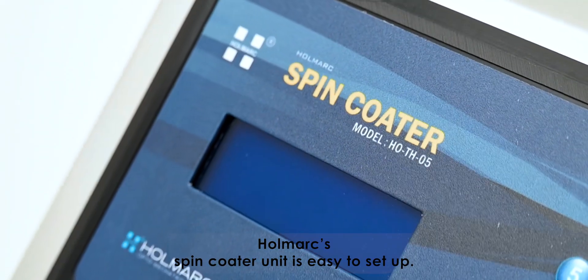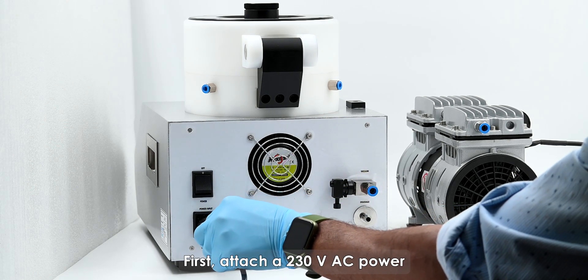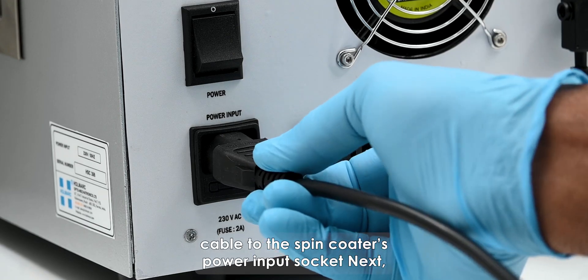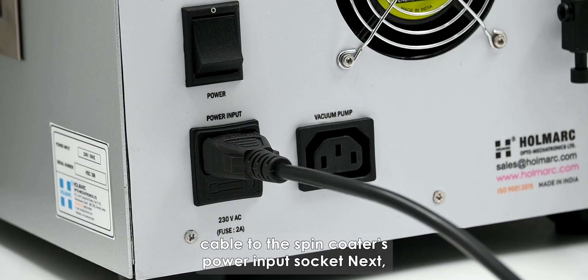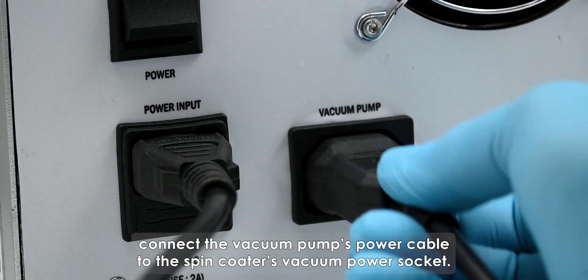Hallmark spin coater unit is easy to set up. First, attach a 230 volt AC power cable to the spin coater's power input socket. Next, connect the vacuum pump's power cable to the spin coater's vacuum power socket.